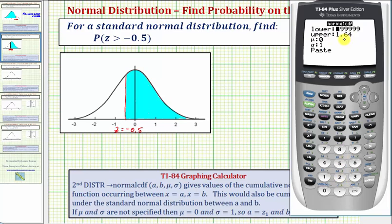This brings up this screen, which is different from the older version of the 84 or the 83. Again, our lower bound z-score is going to be negative 0.5. And again, I'm saying z-score because we are going to use zero for the mean or mu, and one for sigma or the standard deviation.